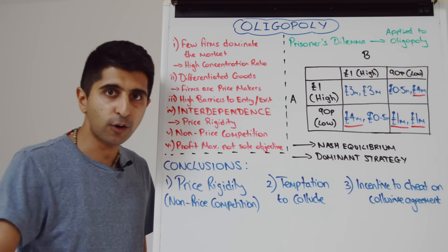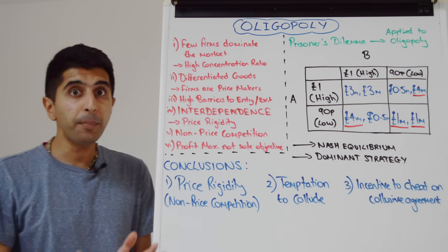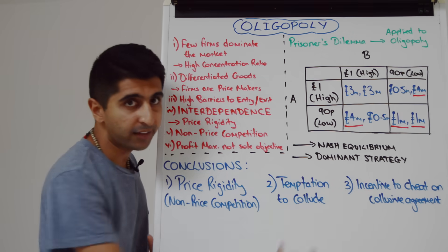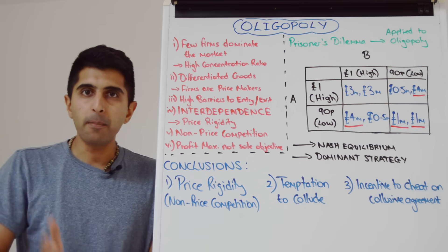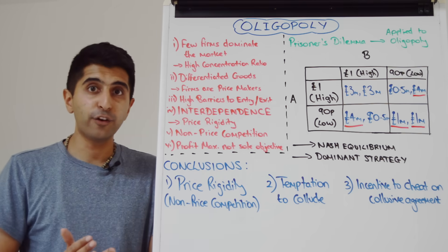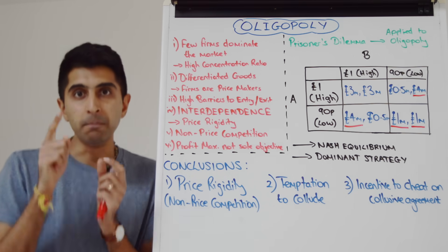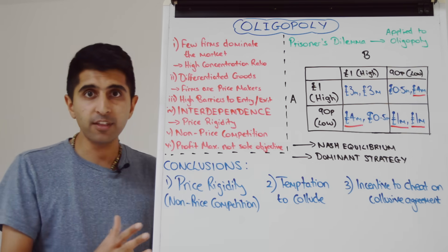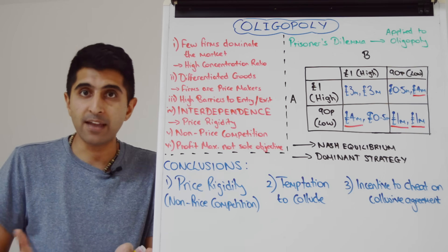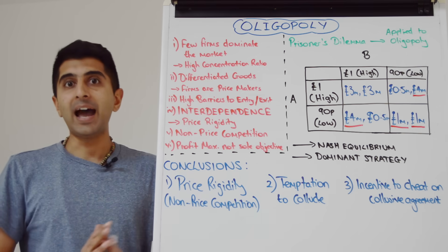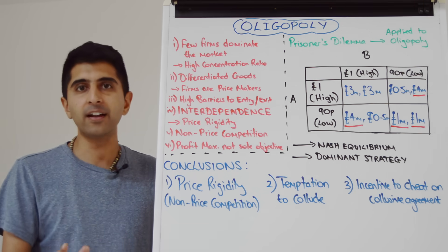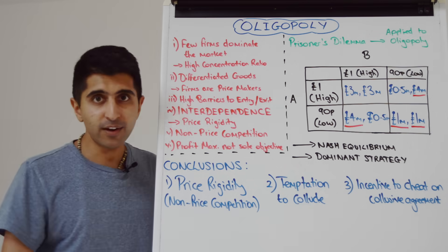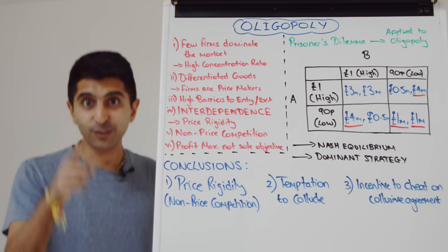So the prisoner's dilemma game applied to oligopoly leads us to three very interesting conclusions, all because of interdependence: because of interdependence we get price rigidity, but then there's the temptation to collude, and then the question of whether collusion will last in the long run. This tells you that oligopoly can go in many different directions, and understanding the behaviour of oligopolists is not the simplest thing. Stay tuned for the next video where we summarise everything from kinked demand and game theory and look at how oligopolists actually behave. Thank you so much for watching!